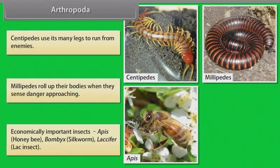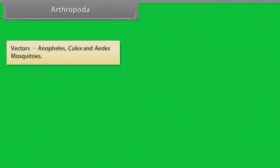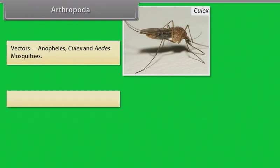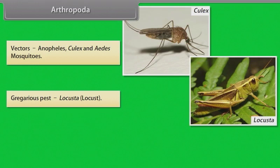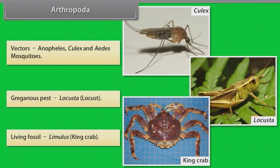Economically important insects include Apis (honeybee), Bombyx (silkworm), and Laccifer (lac insect). Vectors include Anopheles, Culex and Aedes mosquitoes. A gregarious pest is Locusta, that is locust. The living fossil is Limulus, or King Crab.